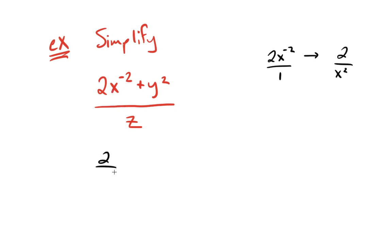So this first term we're going to rewrite as 2 over x squared plus y squared, and all of this is going to be divided by z. So here's our first step.